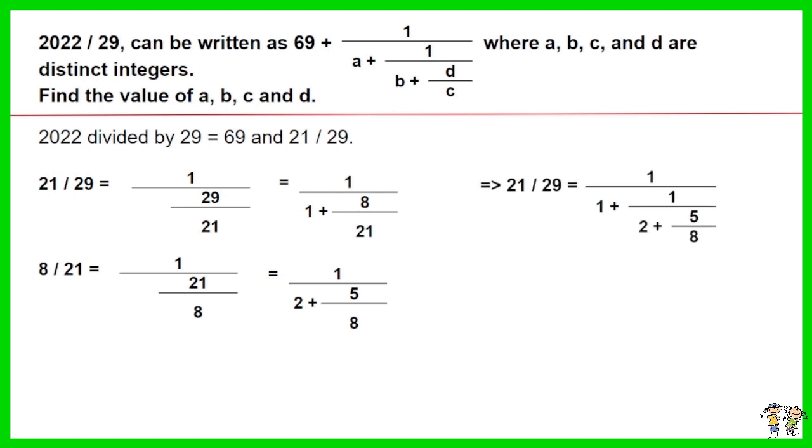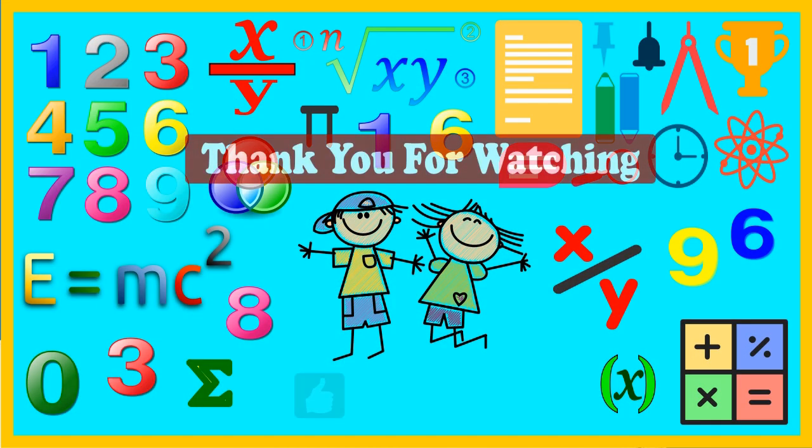Put their values into the equation for 21 over 29. You will see the value of A equals 1, B equals 2, C equals 8, and D equals 5.